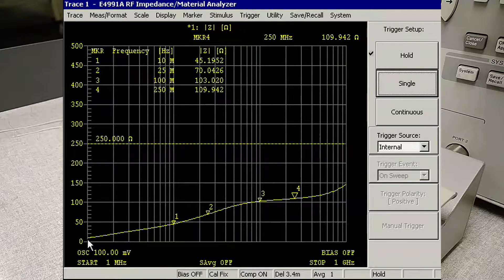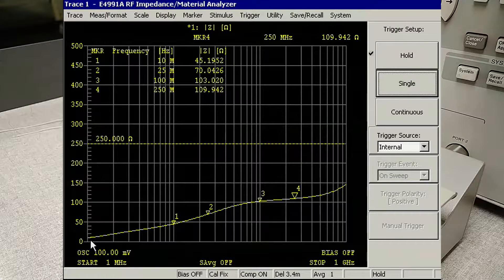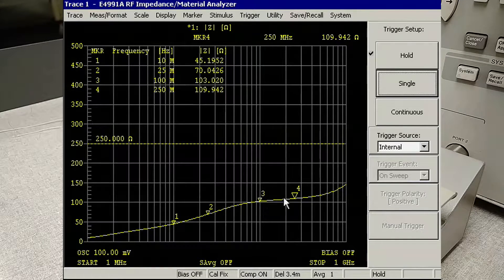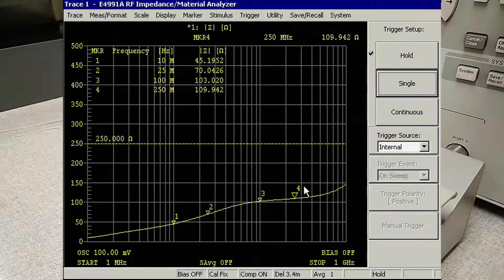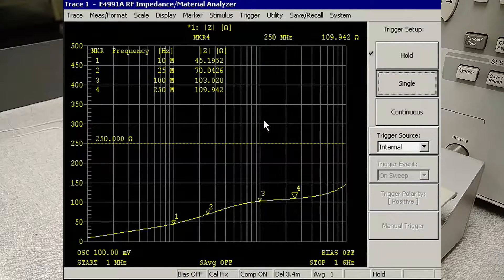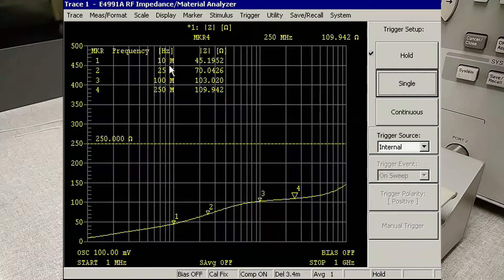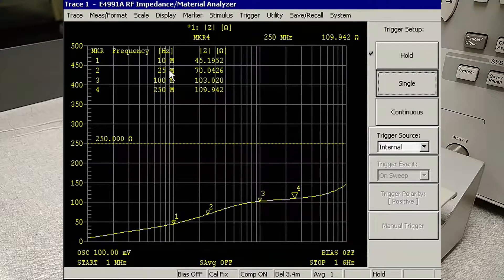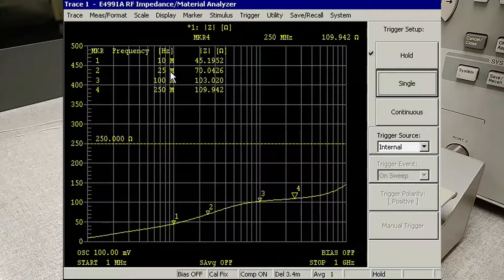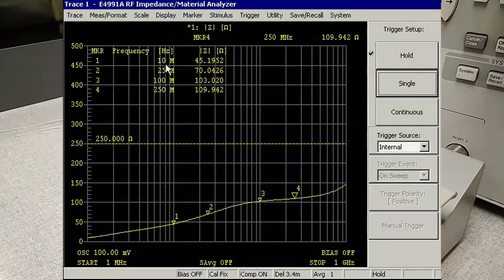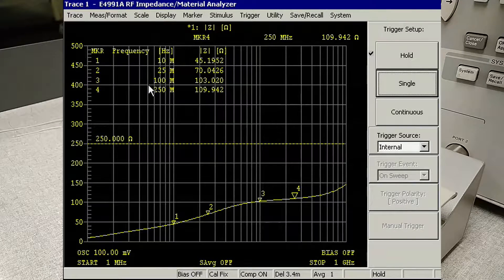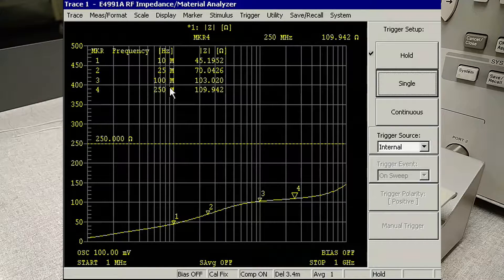So we see a plot here of impedance over frequency. And we have four markers set at frequencies that correspond to our typical listed values for this part. So those are at 10 megahertz, 25 megahertz, 100 megahertz and 250 megahertz.